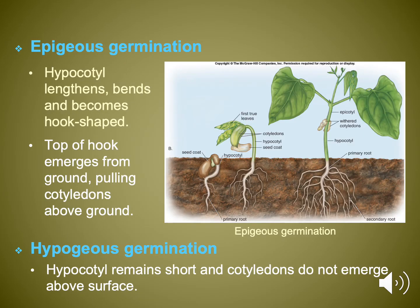Once the conditions are suitable, a seed may germinate. There are multiple types of germination. The two main types, epigeous and hypogeous, differ in whether or not the cotyledons are observed above the soil surface. With epigeous germination, the hypocotyl — the developing stem — is hook-shaped and pushes its way up through the soil. Once through the soil, the cotyledons are there to photosynthesize, but they quickly disintegrate when the first true leaves start to function. In hypogeous germination, the cotyledons never appear above the soil surface.